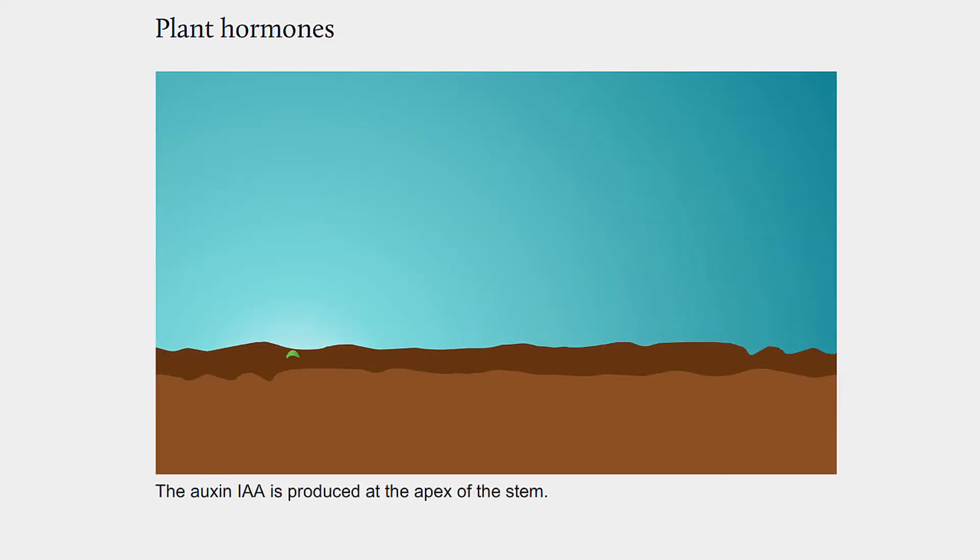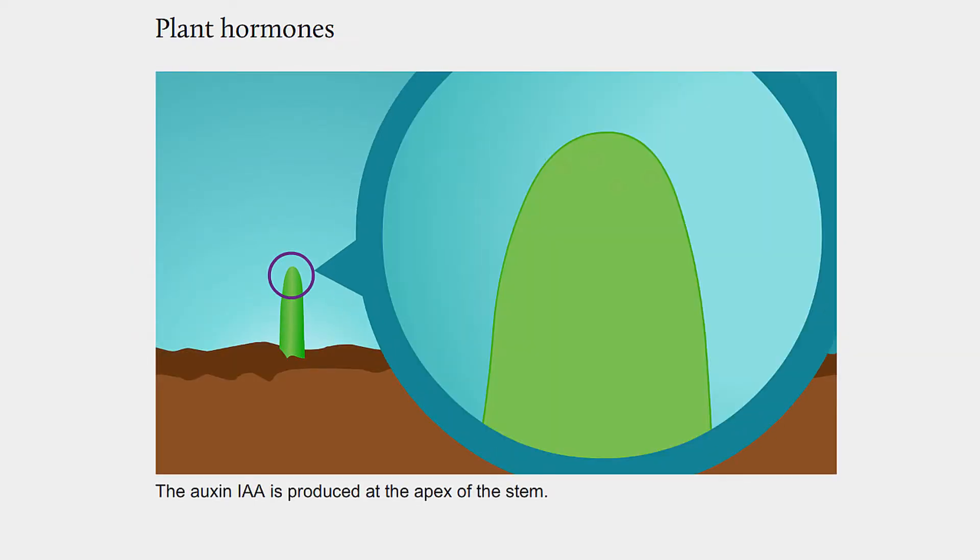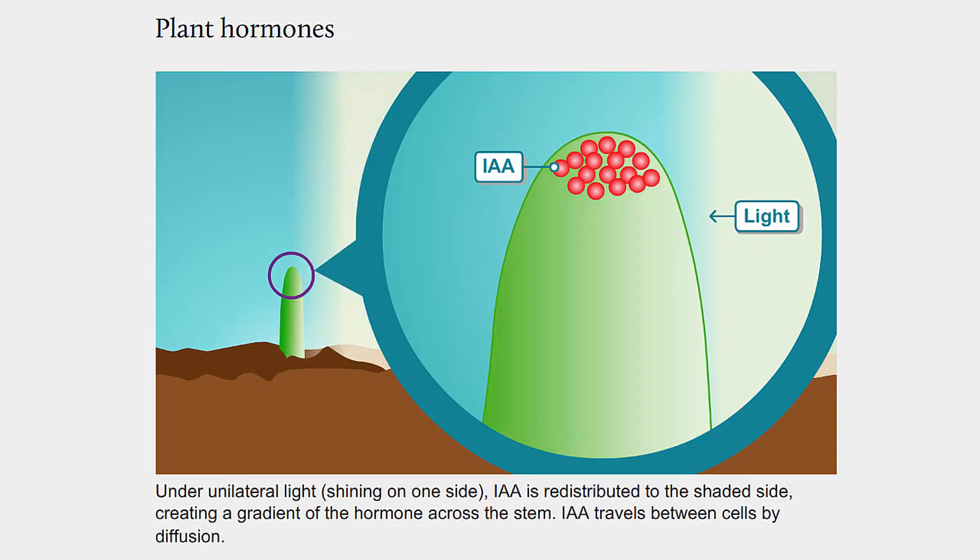The auxin IAA is produced at the apex of the stem. Under unilateral light shining on one side, IAA is redistributed to the shaded side, creating a gradient of the hormone across the stem. IAA travels between cells by diffusion.